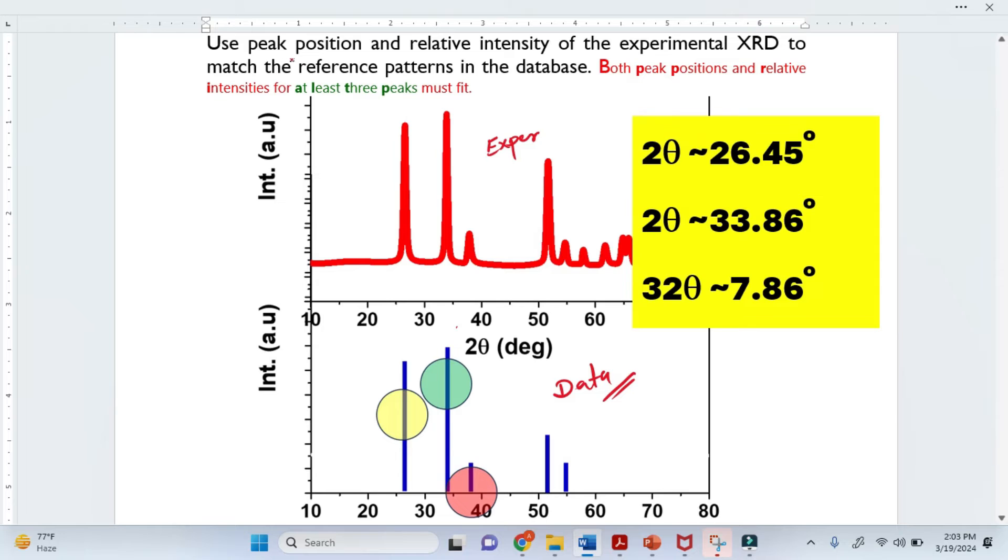We basically compare and match the peak position. This is the peak position at the x-axis. We compare the peak position and relative intensity. In my synthesized material, the experimental XRD peak is here at this point. So the database peak should match with the database peak here. You see here the intensity. Similarly, the second is higher. So it should match 100% with the database peak here.